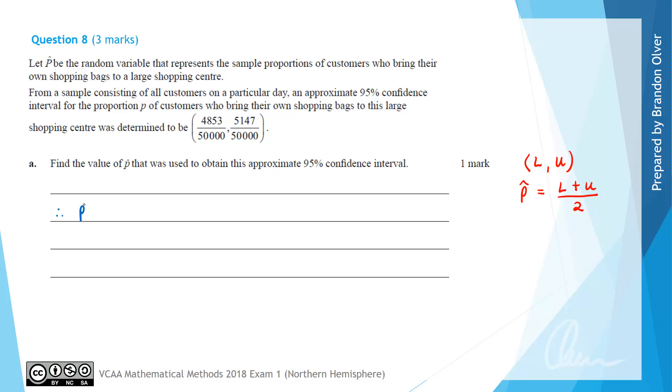For our interval, P hat would equal one half times the sum, so we have 4853/50000 plus 5147/50000. That equals one half times 10000/50000.